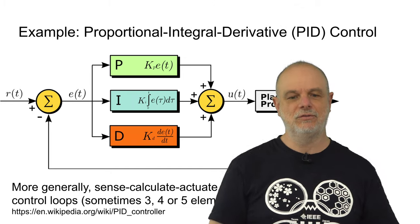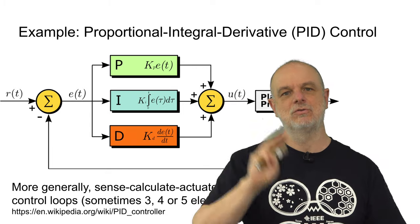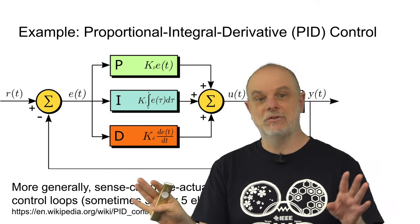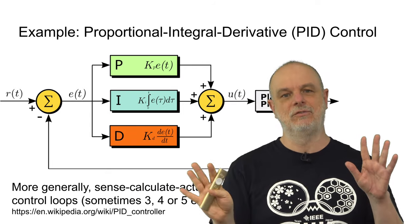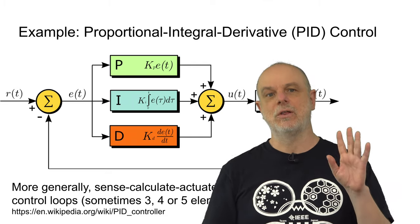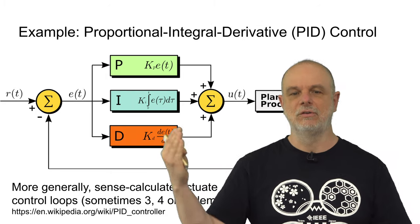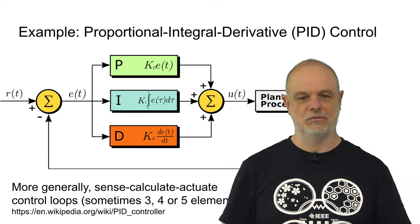There are three phases to this. There is sense, calculate, and actuate, or control the system. Now, you might see other diagrams that include four or five phases in this, but three is a good enough place to start. This is what you call a control loop. And you can do this using information. So, this information actually controls the system for you.